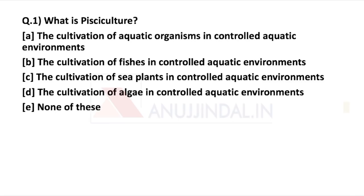Let's begin with the first question: What is Pisciculture? There are different types of cultures and we will be discussing some of the important ones. Pisciculture refers to the cultivation of fishes in a controlled aquatic environment. It's important to notice that there are two kinds of culture — aquaculture and Pisciculture. Pisciculture is related to the cultivation of only fishes.